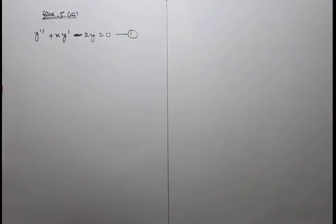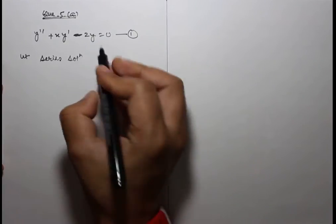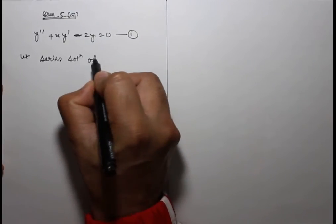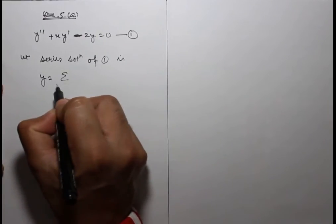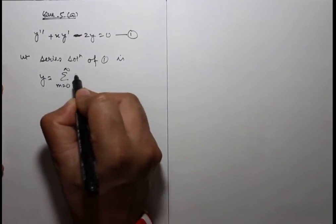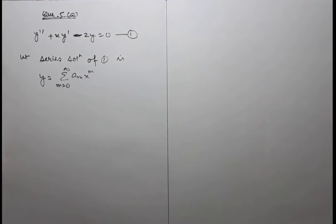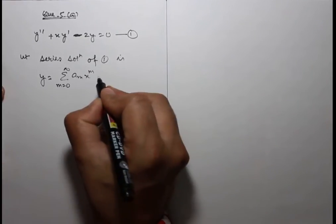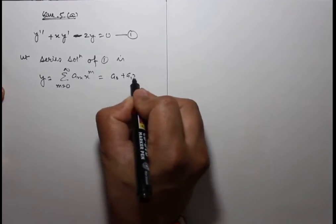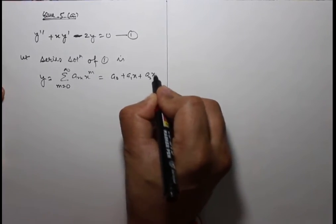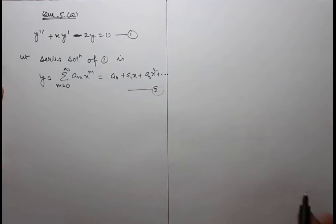Using the power series method, the series solution is y = Σ(m=0 to ∞) a_m x^m, which equals a₀ + a₁x + a₂x² + ... and so on. This is equation 2.